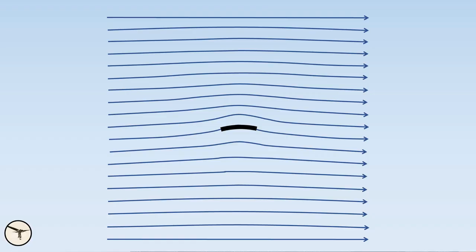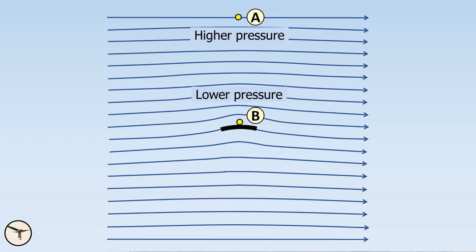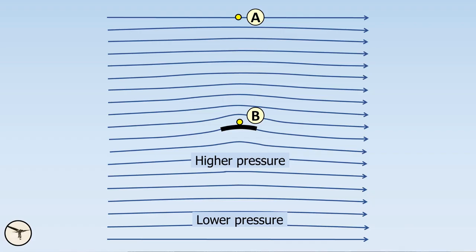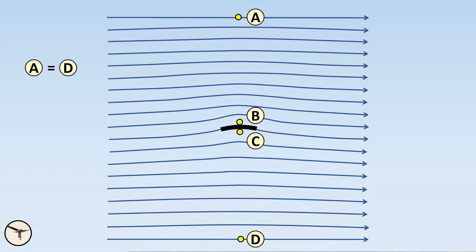Now, let's put a curved shape in an airflow. As the air is flowing over the shape, it is compressed and follows the curvature of the shape. Since the airflow is following a curved path, the air pressure must decrease towards the shape — in other words, the air pressure at A is higher than at B. And below, the curvature causes the airflow to expand and follow the curvature of the shape. Since the airflow is following a curved path, the air pressure must decrease away from the shape — in other words, the air pressure at C is higher than at D. Since the air at A and D have the same pressure, the pressure at B must be less than at C. And this is lift.